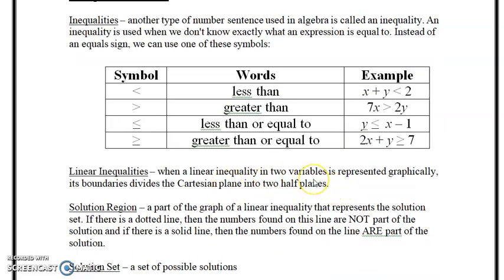Linear inequalities in two variables graphically divide the coordinate plane into two halves. The solution region is the shaded area of the graph that represents any coordinate satisfying the inequality. If the symbol is strictly less than or greater than, we use a dashed or dotted line. If it's less than or equal to, or greater than or equal to, we use a solid line.